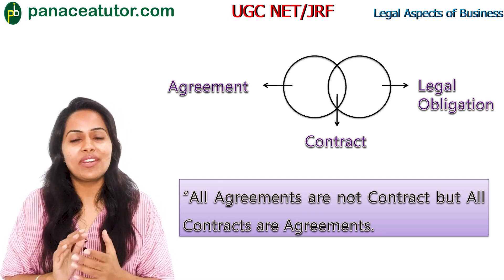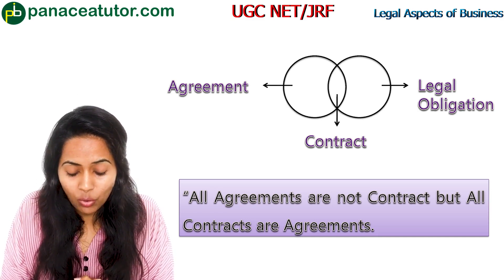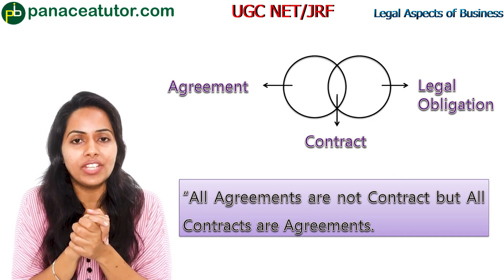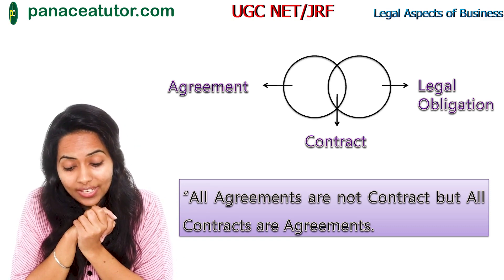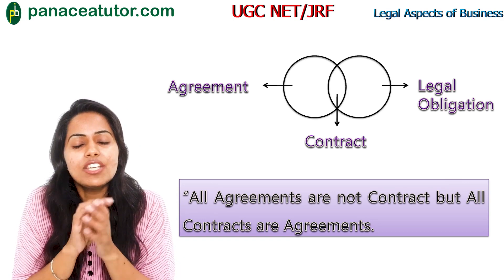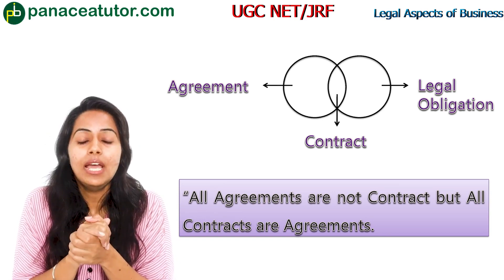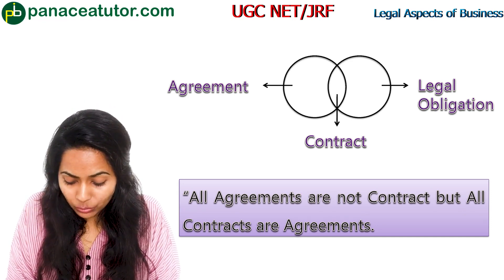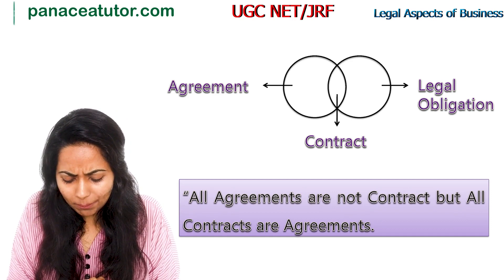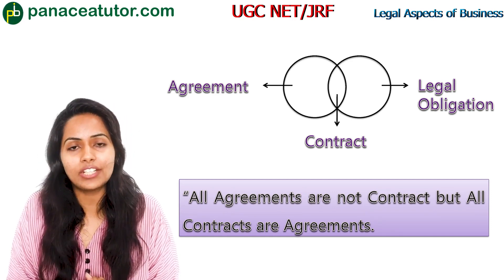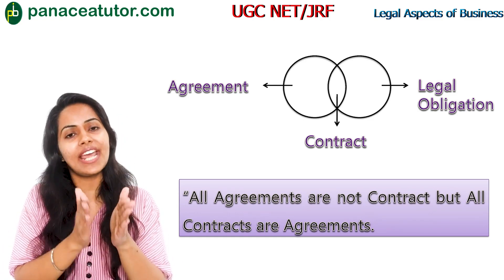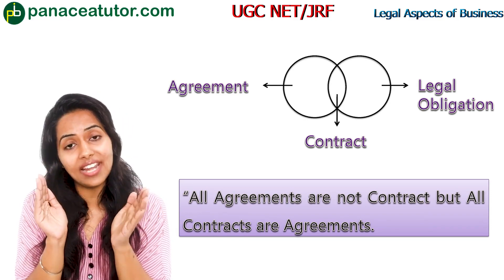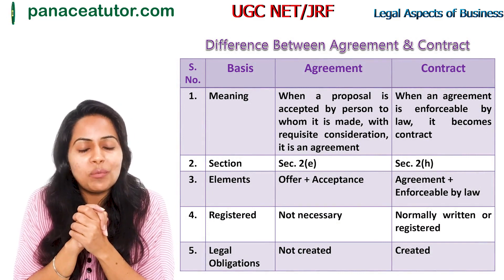All contracts are agreements but all agreements are not contracts — this is a very important line. In an agreement you need offer plus acceptance, but in a contract you need agreement plus enforceability before law. Agreement is a wider term than contract. An agreement with social obligation, incompetent parties, or unlawful consideration cannot be termed a contract. All contracts are agreements because agreement is already embedded in contract, but an agreement does not necessarily have legal enforceability. So all contracts are agreements but all agreements are not contracts.